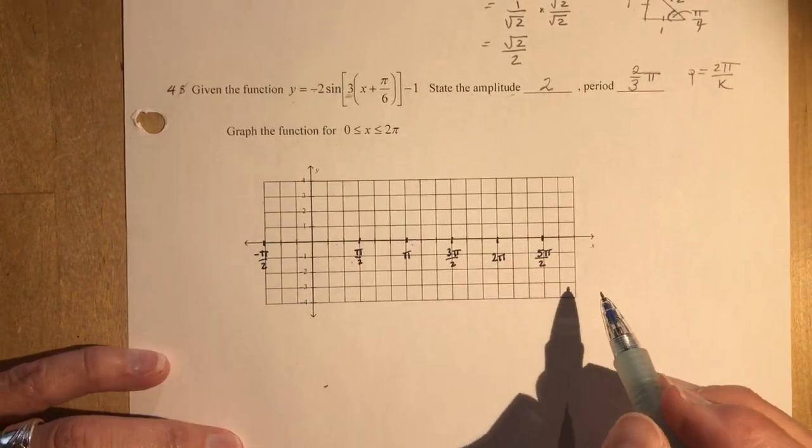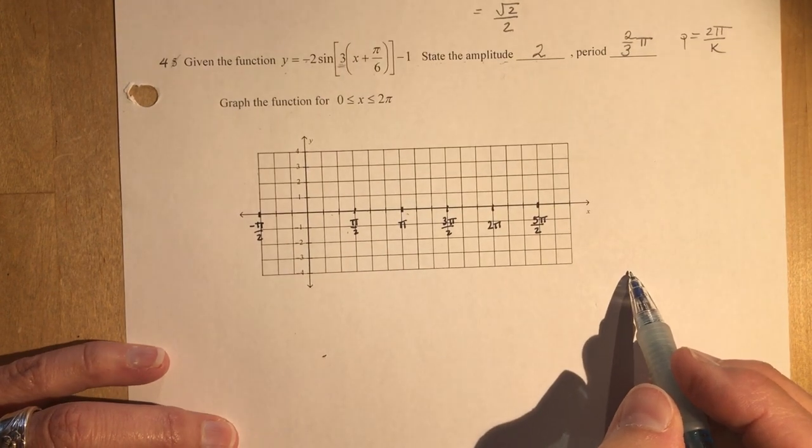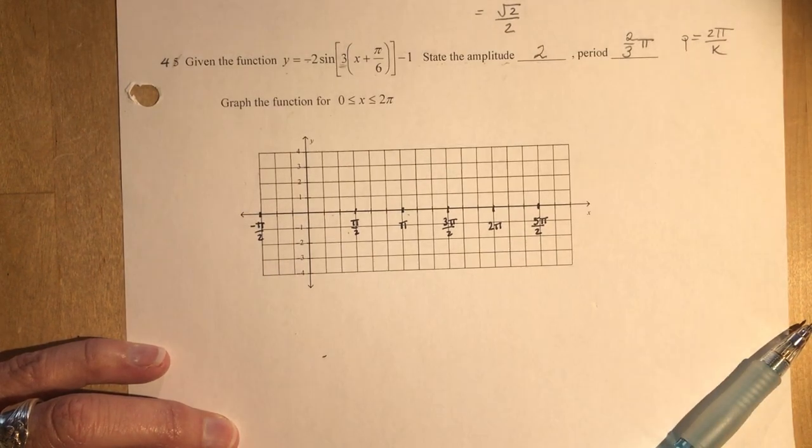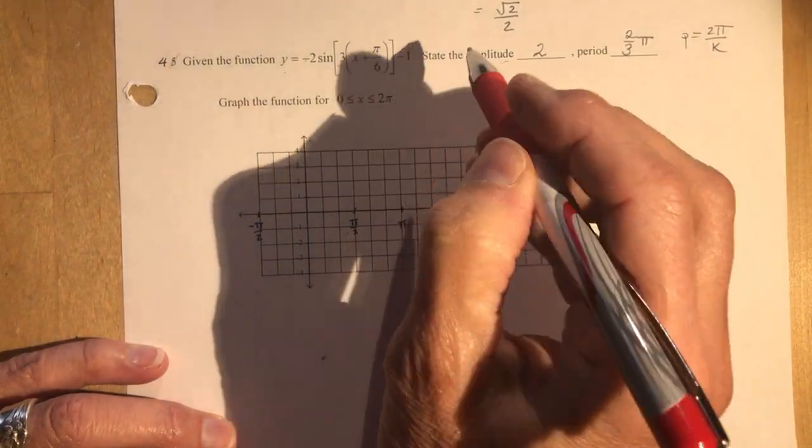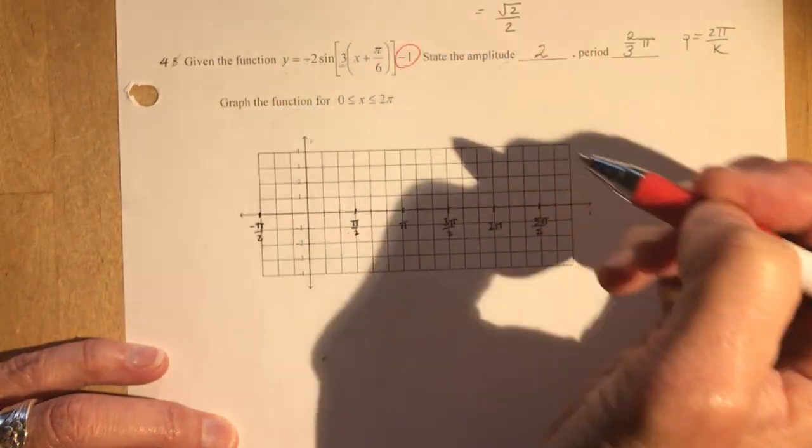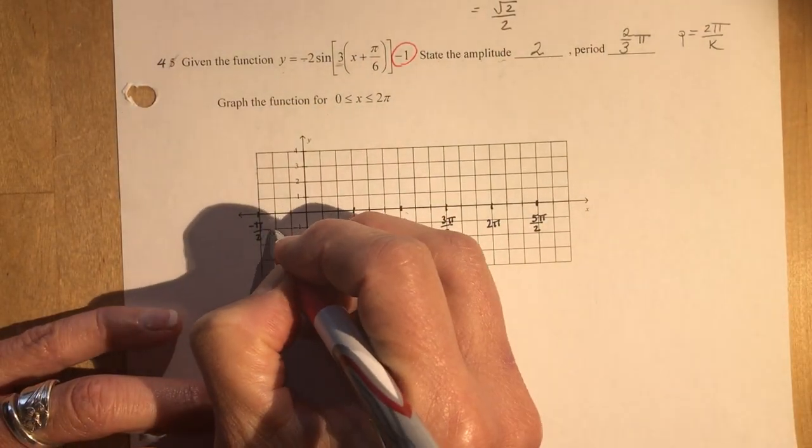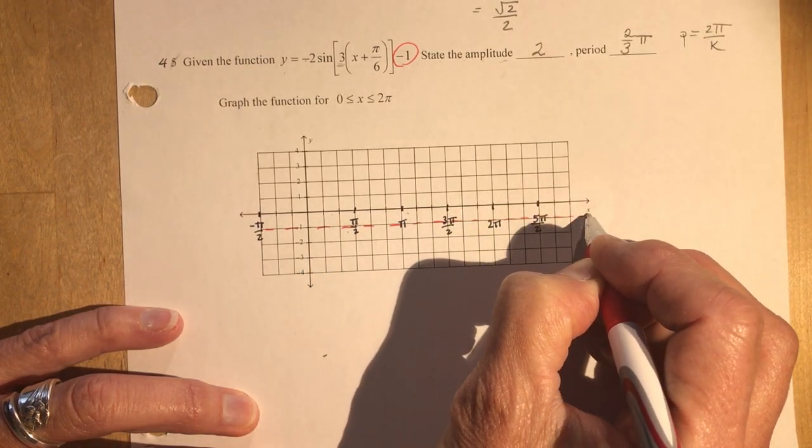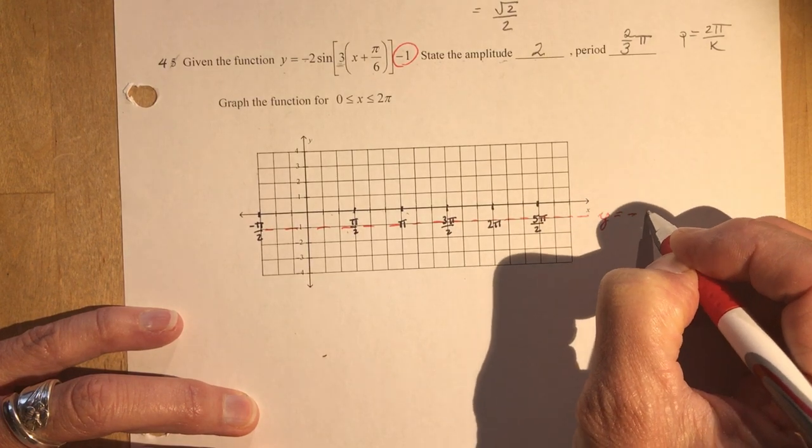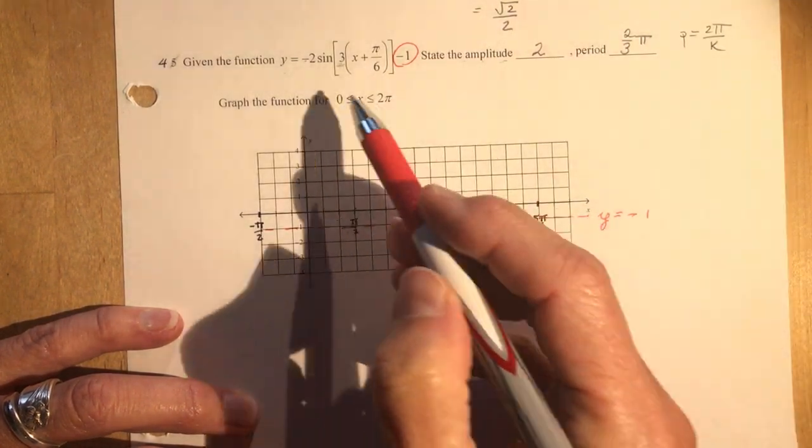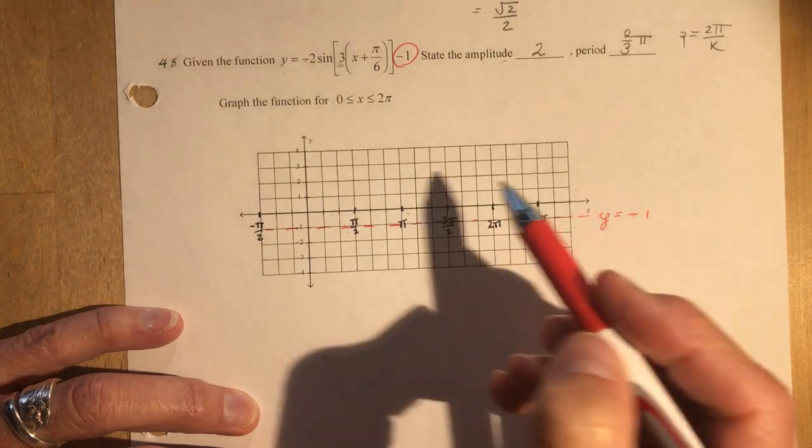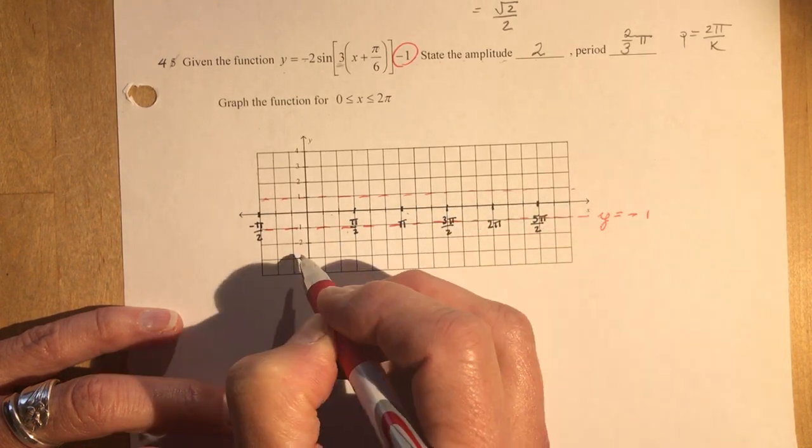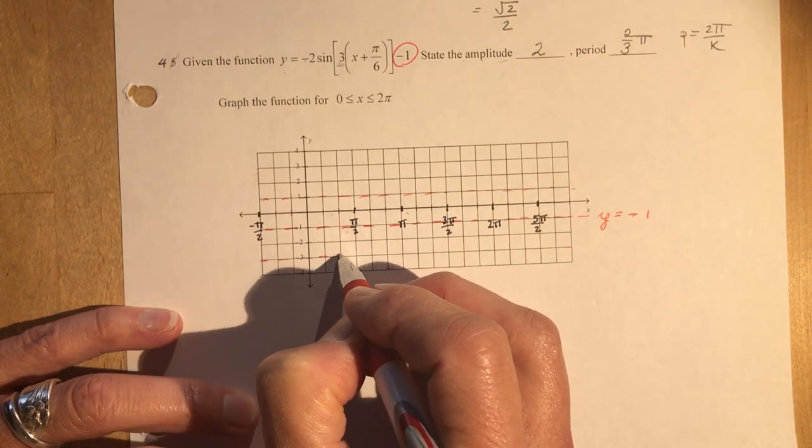Now graph the function. You can do it one of two ways. You can use key points and plot it, or you can just kind of use your head with this one. I'll show you how easy it is. We have the negative 1 here. Remember we talked about this value here. That is the axis that you're going to put on your graph. So I'm going to put my axis here. So it's been shifted down 1. So this is going to be y equals negative 1. Now the function has an amplitude of 2. So that means that the highest point on my graph is going to be here, and the lowest point is going to be at minus 3.